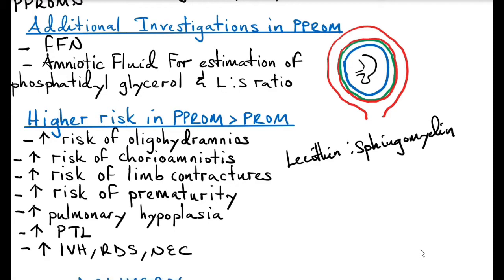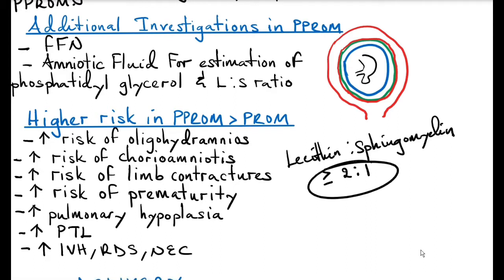Lecithin is produced by type 2 pneumocytes. If the ratio of lecithin to sphingomyelin is more than 2:1, fetal lung maturity has occurred.